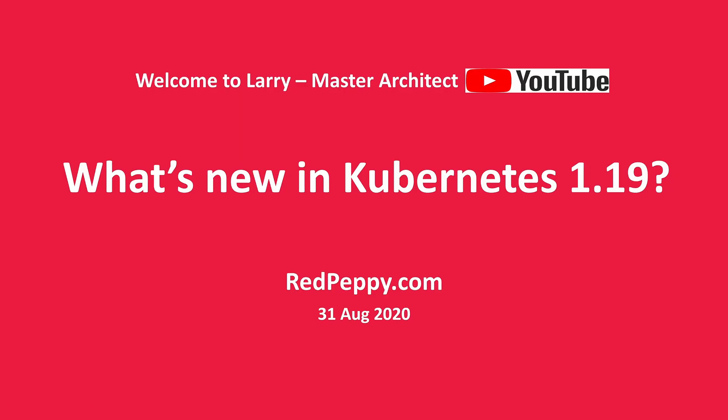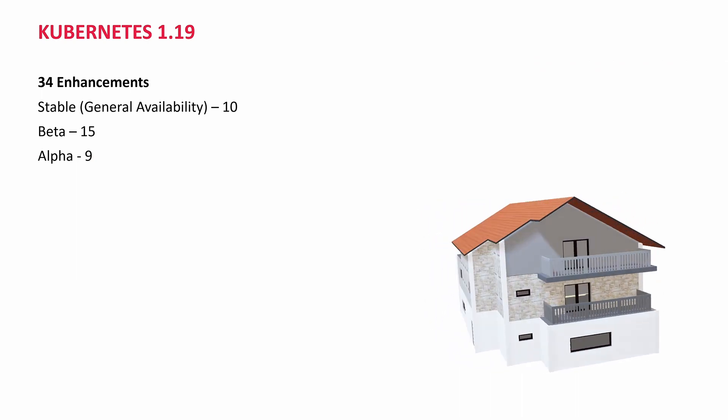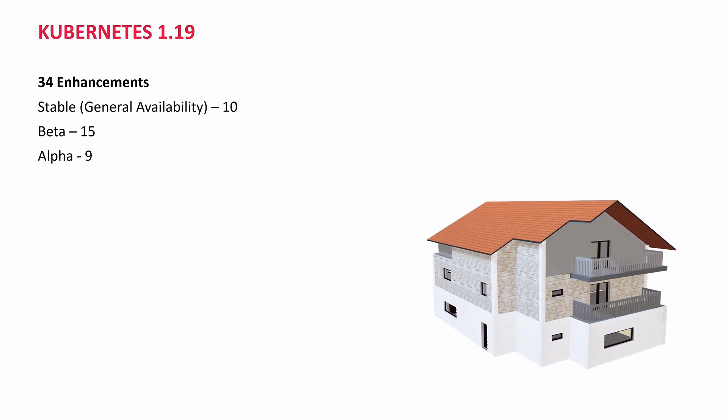What's new in Kubernetes 1.19 from redpapi.com. Today is 31 August 2020 in Vancouver, Canada. Kubernetes 1.19 comes with 34 enhancements: 10 of them are stable general availability, 15 beta, and 9 alpha brand new enhancements.